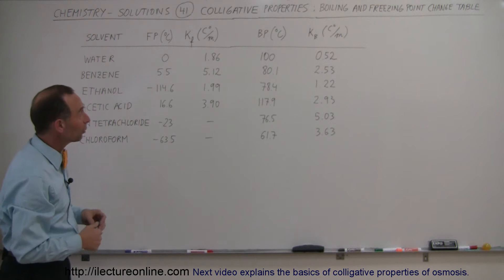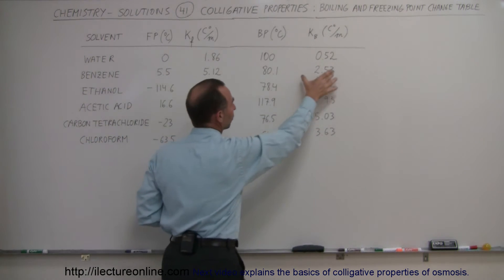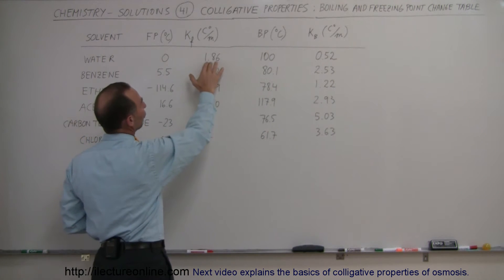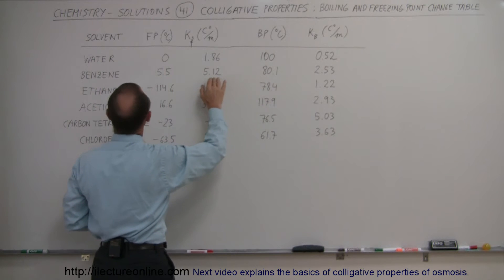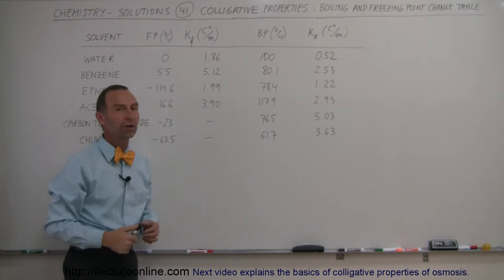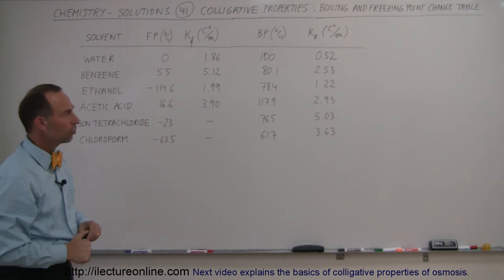What's interesting to note is that in all cases, the constant for the freezing point is larger than the constant for the boiling point. The difference can be as much as almost 4 to 1 for water, kind of 2 to 1 for benzene, and in other cases, it's maybe 50% larger for the freezing point change than for the boiling point change.